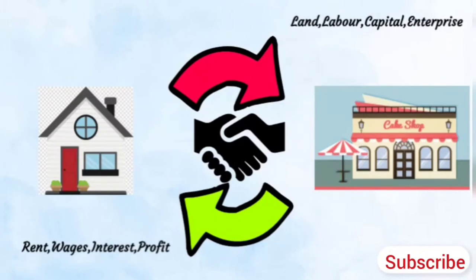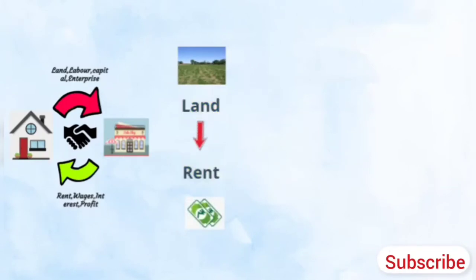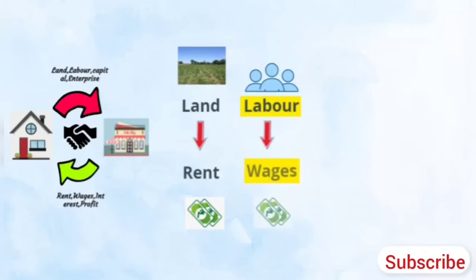Let us see in detail how it actually works. When households give land to the firm, in turn they receive rent from the firm. Households provide laborers to the firm and in turn they receive wages from the firm.